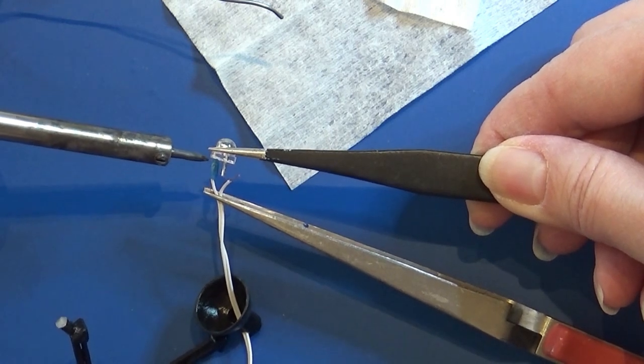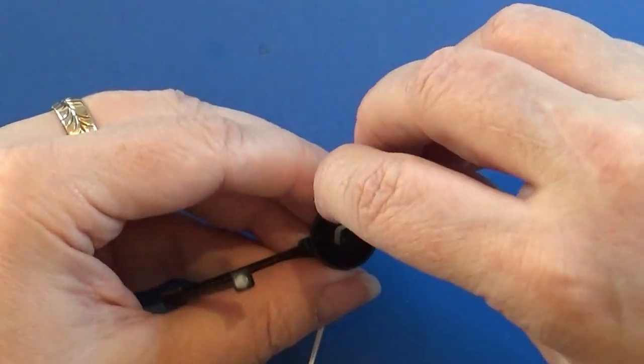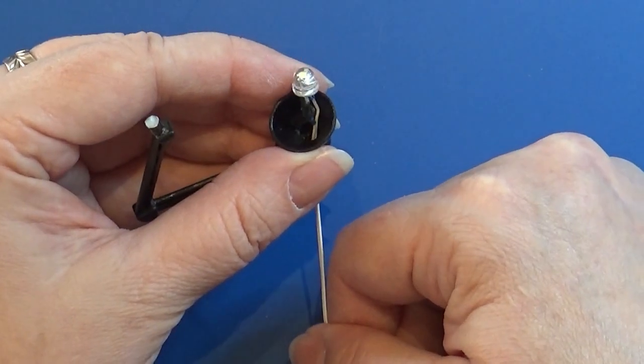Do it with both wires and carefully pull the wire through the lamp so this little bulb is sitting right in there.